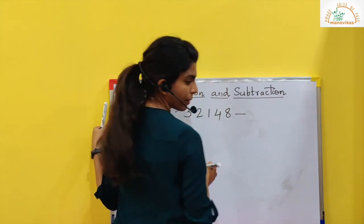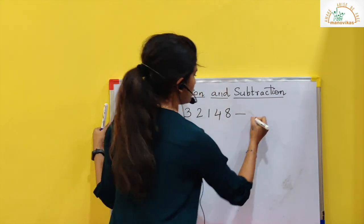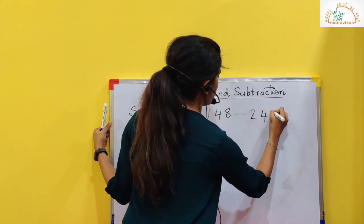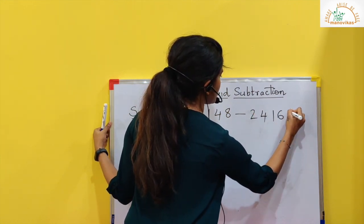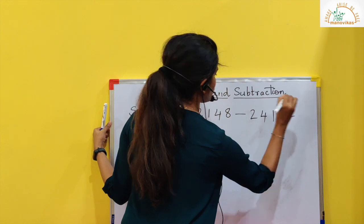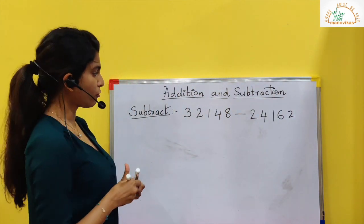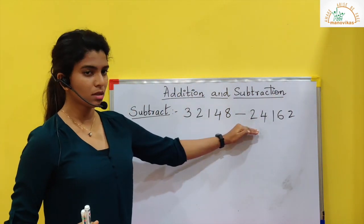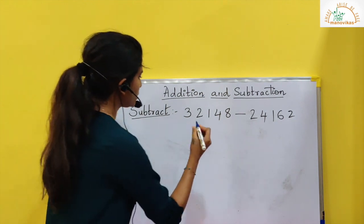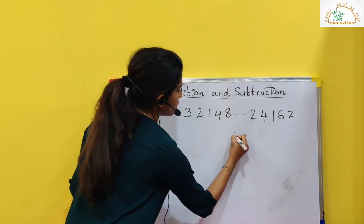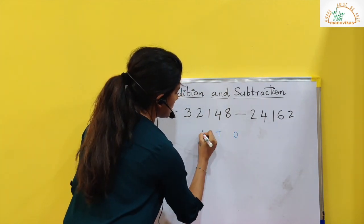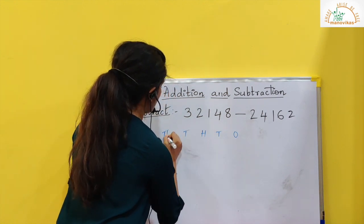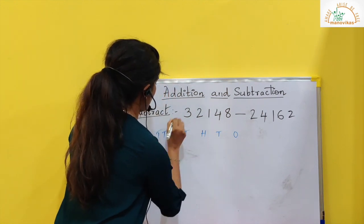Subtraction uses a minus sign. I take the next number: 2, 4, 1, 6, 2. Now if you see here, I have two numbers. Then I put the place values: ones, tens, hundred, thousand, ten thousand.